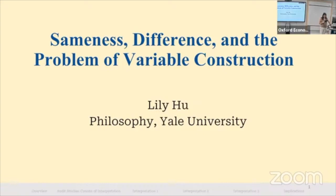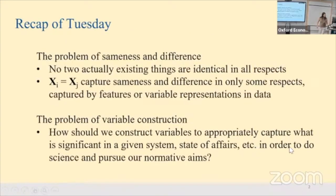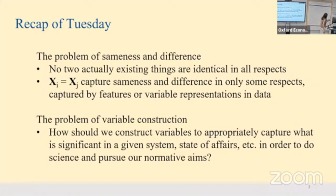Thank you all for making it on this beautiful Friday. So on Tuesday I introduced this problem of sameness and difference — the fact that any two things are going to be different in innumerable ways. This was to make the basic point that the sense of equality and difference referenced when we use variables and formalisms refer only to the particular variable abstractions, not to the thing in itself. They only refer to the data we're capturing.